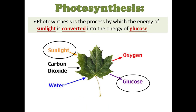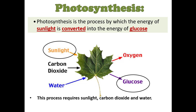Photosynthesis is the process by which the energy of sunlight is converted into the energy of glucose. This process requires sunlight, carbon dioxide, and water. This process produces glucose and oxygen.